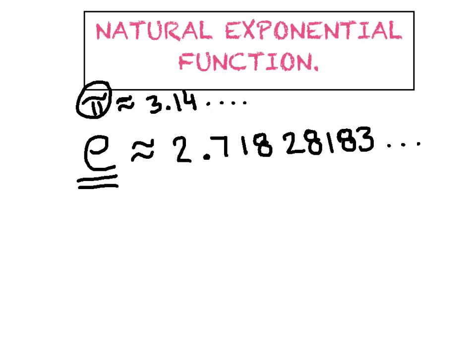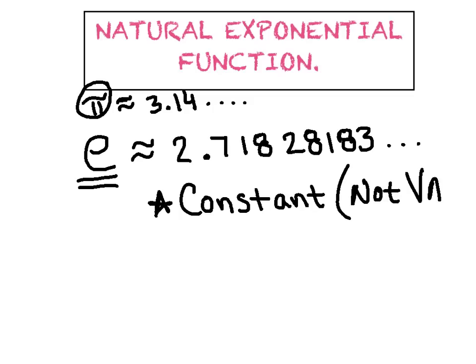A couple of important things about E. E is what we call a constant. A constant is the opposite of a variable. In other words, E is not a variable. A variable is something that changes over time, whereas E is always going to be 2.718 all the time, any time of the day, every day of the week.